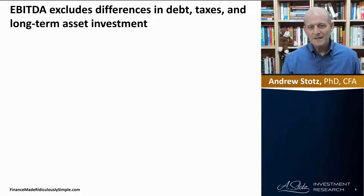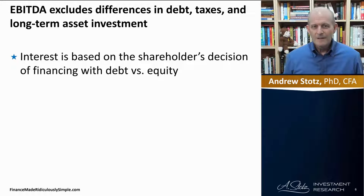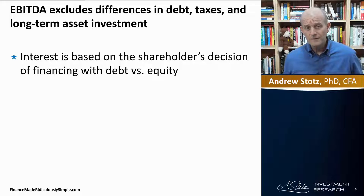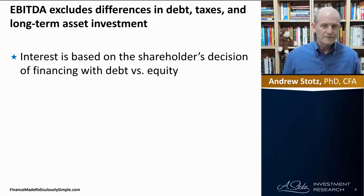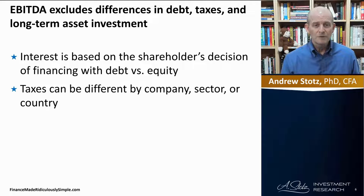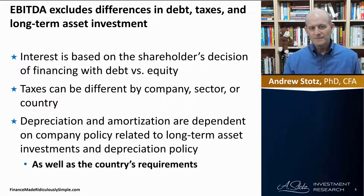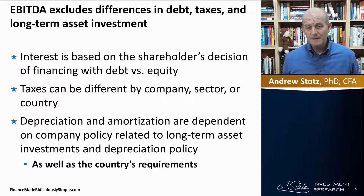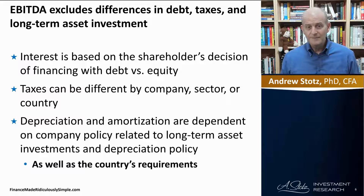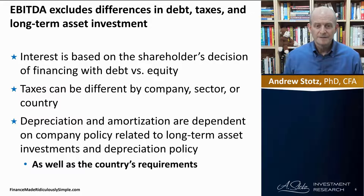Let's look at debt first. The interest paid on debt is based on the shareholders' decision of financing with debt versus equity. Taxes can also differ by company, by sector, or by country. And depreciation and amortization are dependent on a company's policy related to long-term asset investments and depreciation policies — and some countries differ in what they allow.